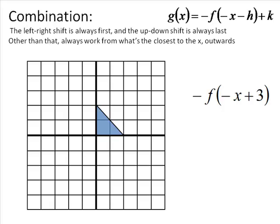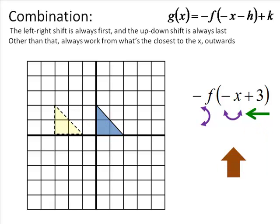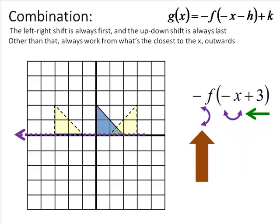Here we've got stuff going on inside, so focus on that first. There's a plus 3 inside — that's the shift, and plus 3 means going left. Then there's a negative x — that's a left-right flip. And there's a flip on the outside too, which is an up-down flip. So: start with left 3, then left-right flip, then up-down flip.